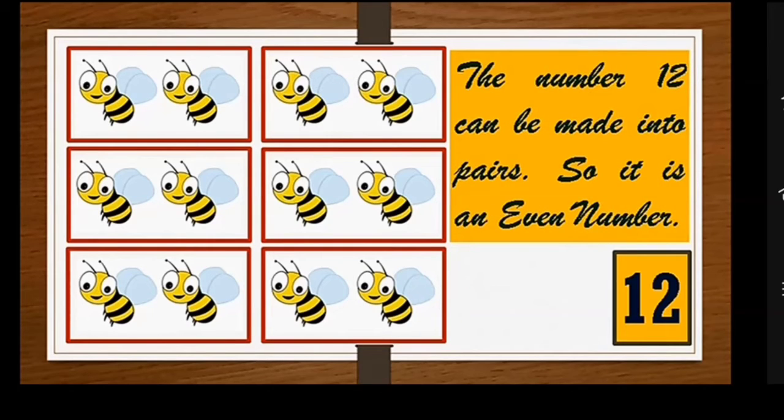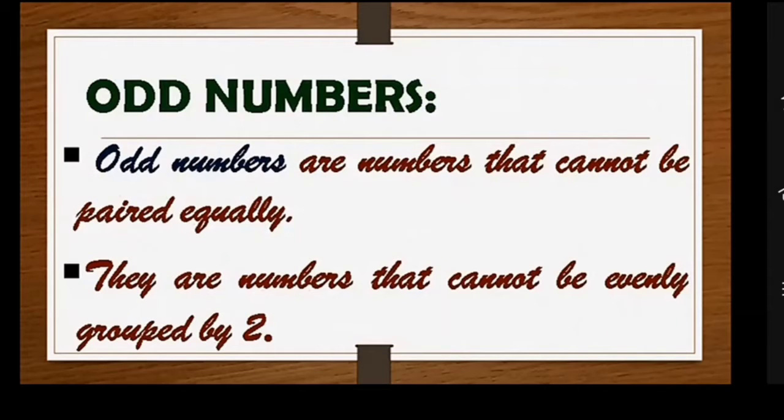Odd numbers are numbers that cannot be paired equally. They are numbers that cannot be evenly grouped by two.